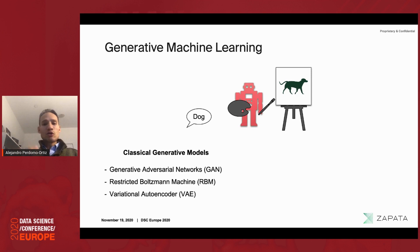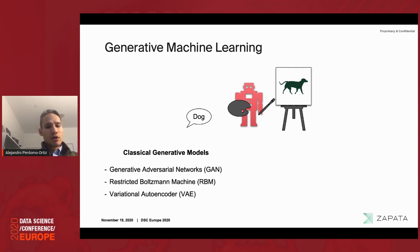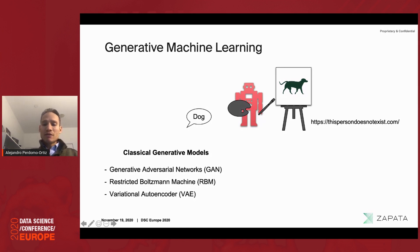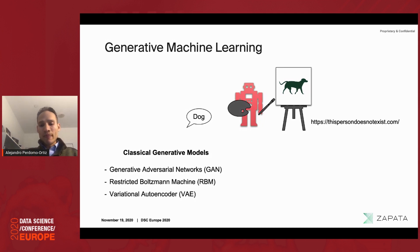A generative model doesn't just classify — it can generate entirely new images. You've probably heard of GANs — generative adversarial networks — or restricted Boltzmann machines, or variational autoencoders. If you visit the website 'thispersondoesnotexist.com,' every time you refresh your browser you see a photo of a person generated entirely by an algorithm. That person does not exist, but it was created by a generative model — that's the power of these techniques.